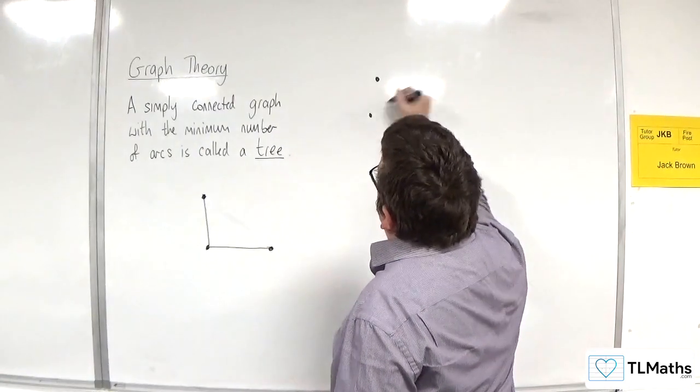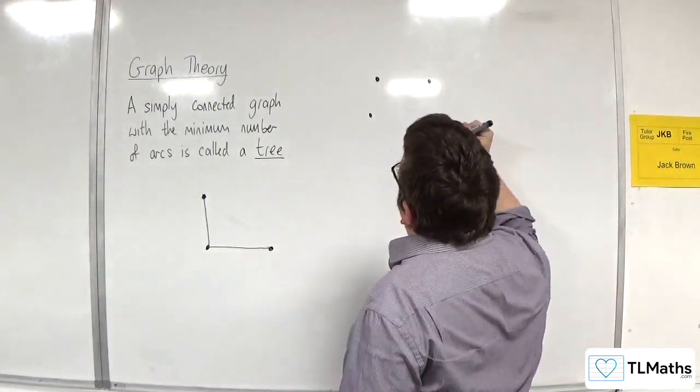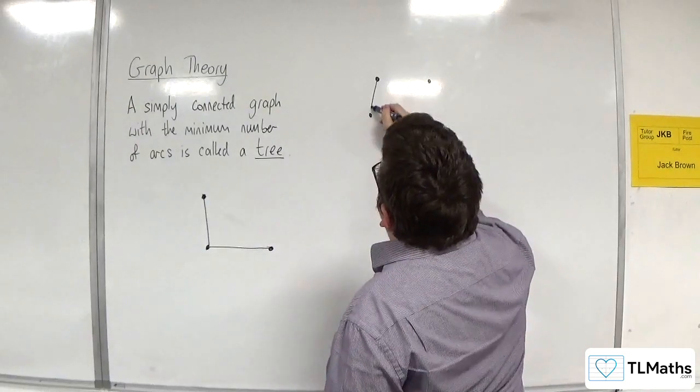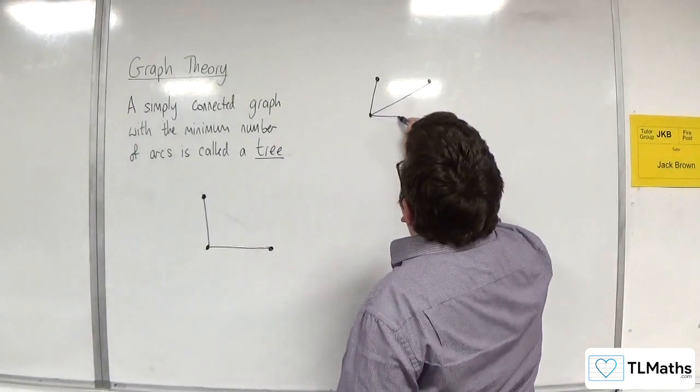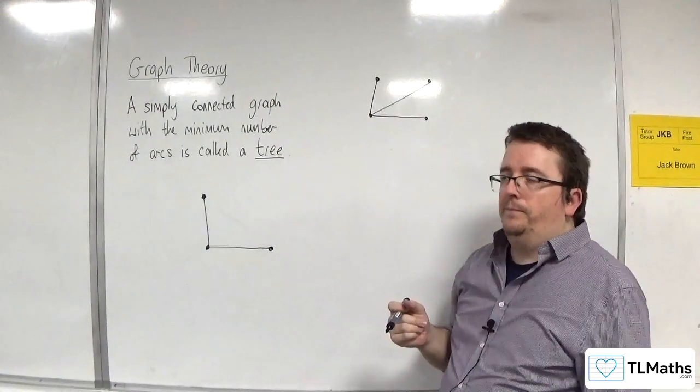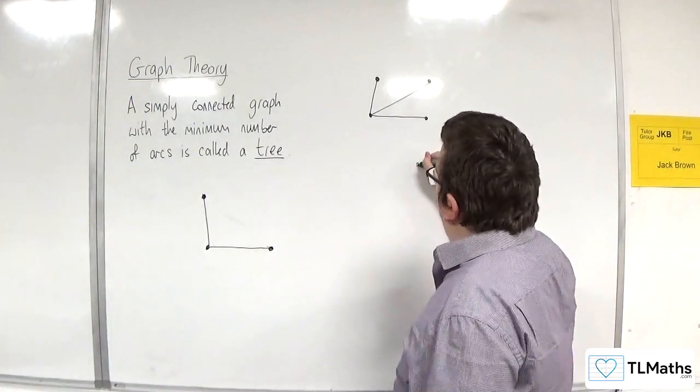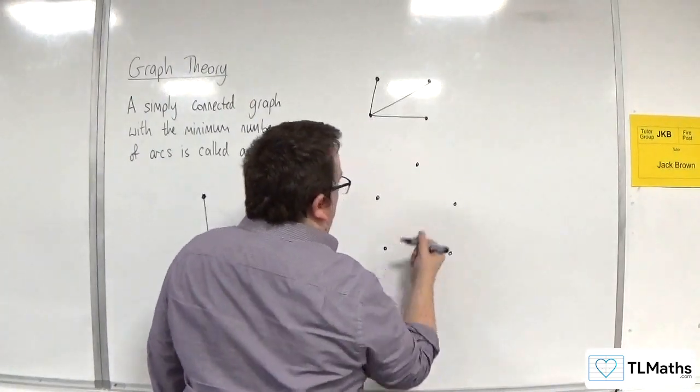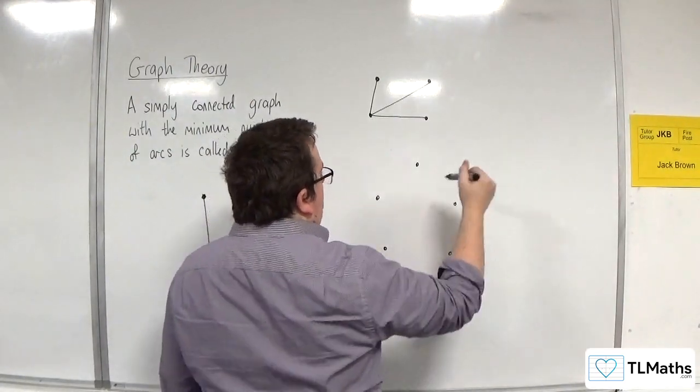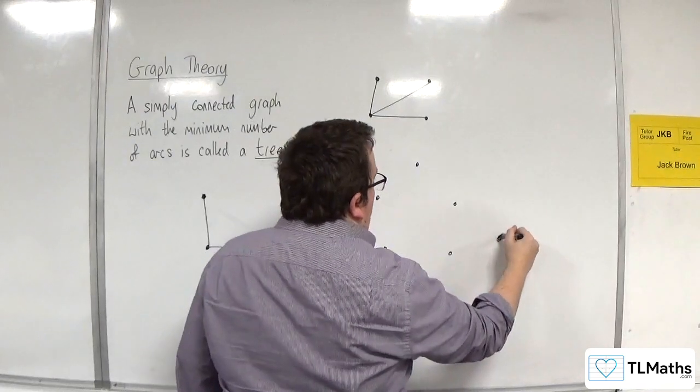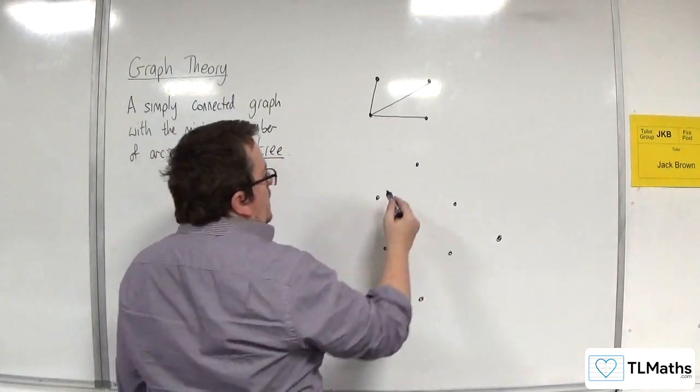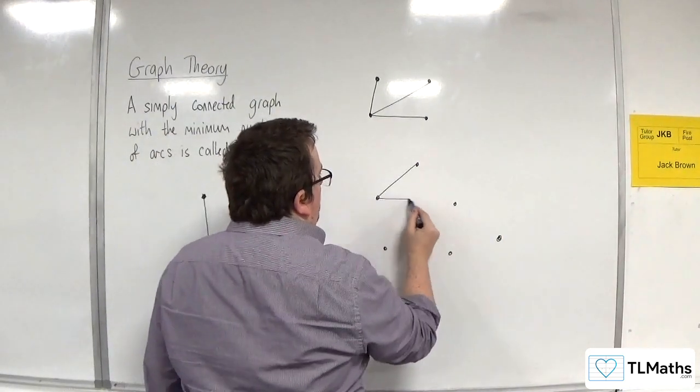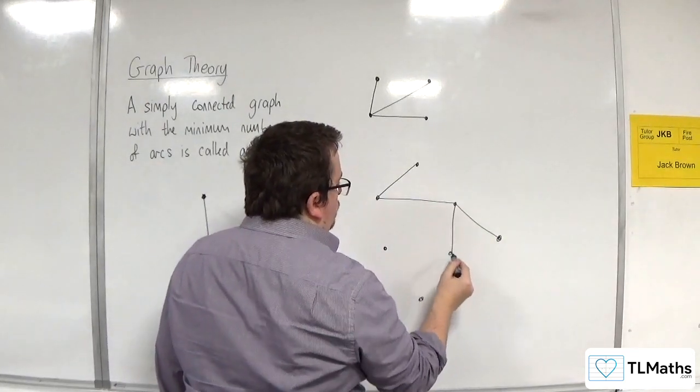So let's say we've got four vertices. Here is an example of a tree with four vertices. Let's say I've got five, let's have six, let's have seven vertices. Here you go. So here is another example of a tree.